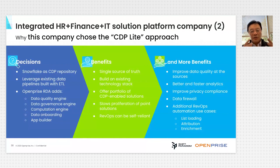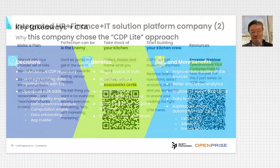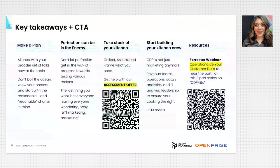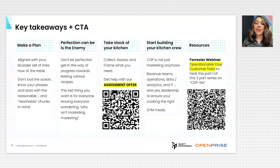They chose this architecture not only because it meets all requirements, but also because of additional benefits like automating list loading, attribution, enrichment, and lead routing. Now, to wrap up: there are five key takeaways. First, make sure you're making your plan—with everyone at the table—but don't boil the ocean. Ensure that plan has a timeline, milestones, blockers, and risks, and all the right people to support you in hitting those milestones.